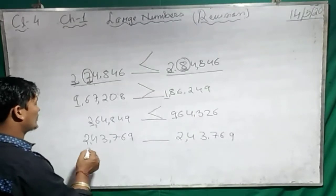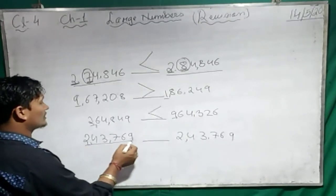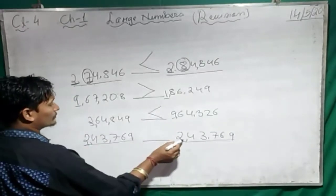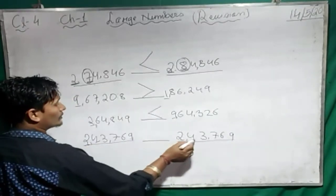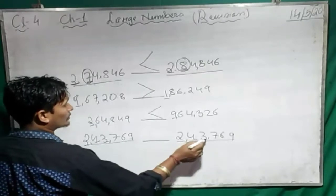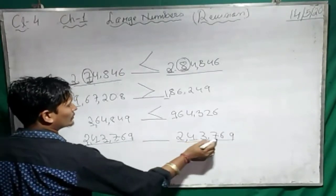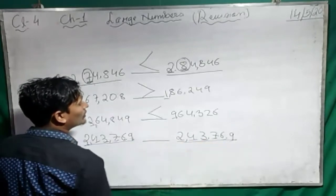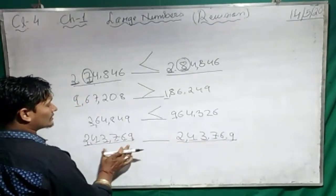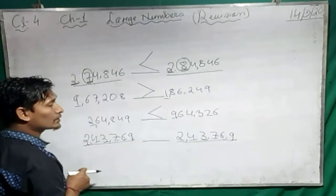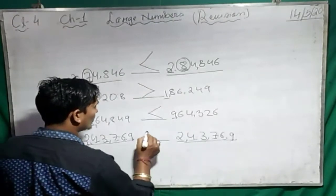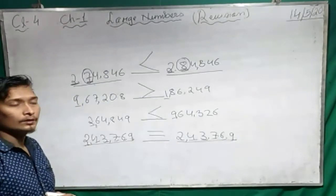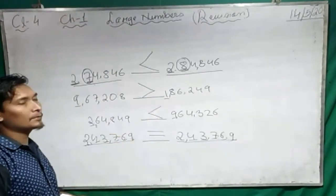Now see here — 6 digits on both sides. Comparing digit by digit: 2 and 2, 4 and 4, 3 and 3, 7 and 7, 6 and 6, 9 and 9. Both sides the digits are the same and the values are also the same. So what do we use? Equal to sign. That is the way to compare a number.